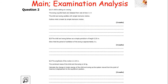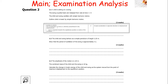A child is sitting on a swing. The swing is pulled back and released from rest at t = 0. The child and swing oscillate with simple harmonic motion. The question asks us to outline what is meant by simple harmonic motion - a very common two-mark exam question. Simple harmonic motion is when the acceleration is directly proportional to the displacement, but directed towards the equilibrium position, or directed in the opposite direction to the displacement.